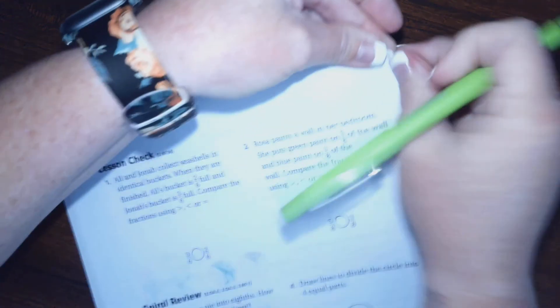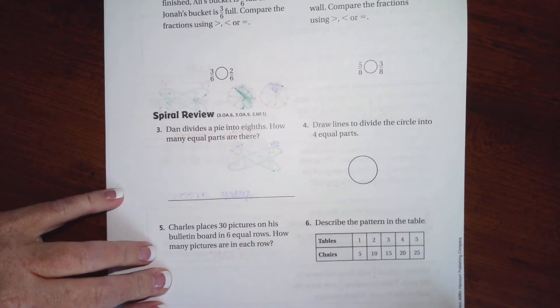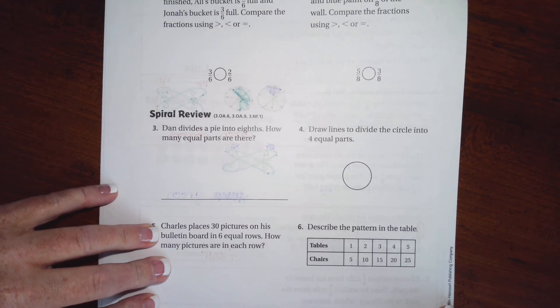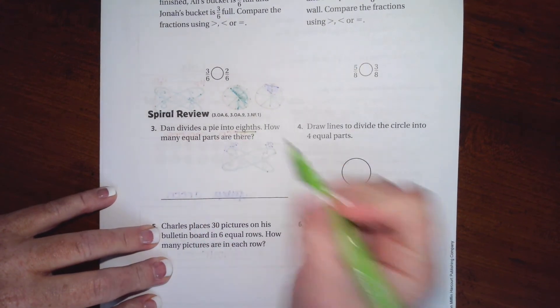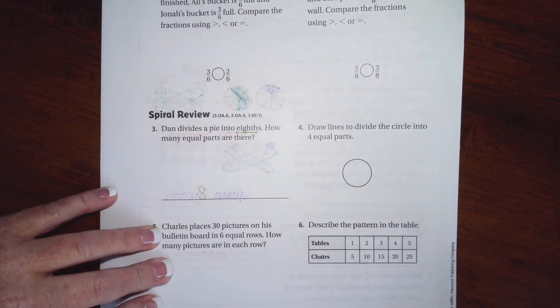All right, we're going to go over onto the back where you guys are going to do the lesson check, just like always. And we're going to go down and do the spiral review. So Sam divides the pie into 8. How many equal parts are there? Well, the 8 tells you there's 8. It's that easy, guys.